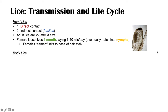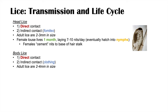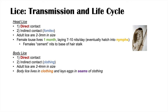Body lice can also be transmitted through direct and indirect contact, most notably through clothing. Adult body lice are slightly larger — about two to four millimeters in size. Body lice live in clothing and lay eggs in the seams of clothing, which differs from head lice. Body lice can live up to three days without feeding on a host, as they feed on the blood of a host.